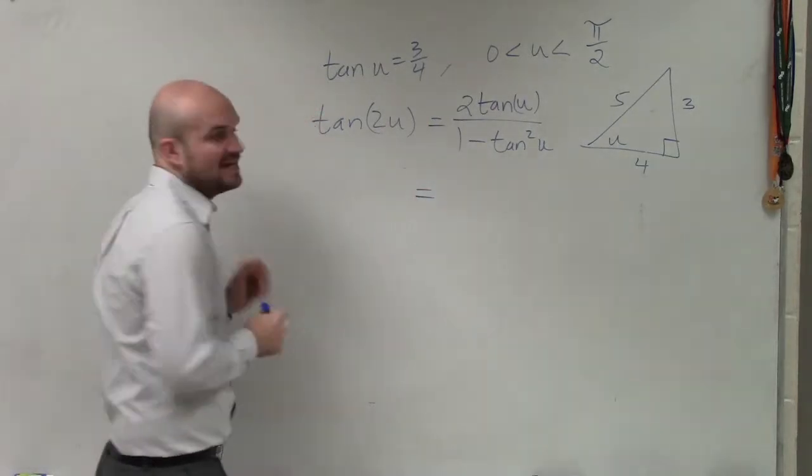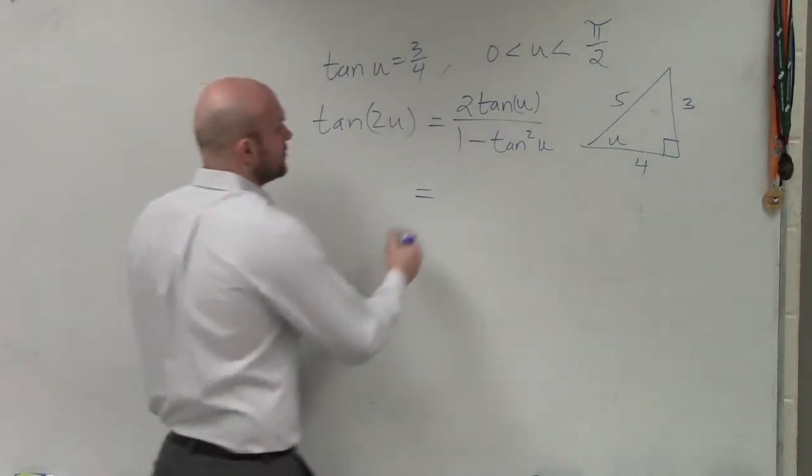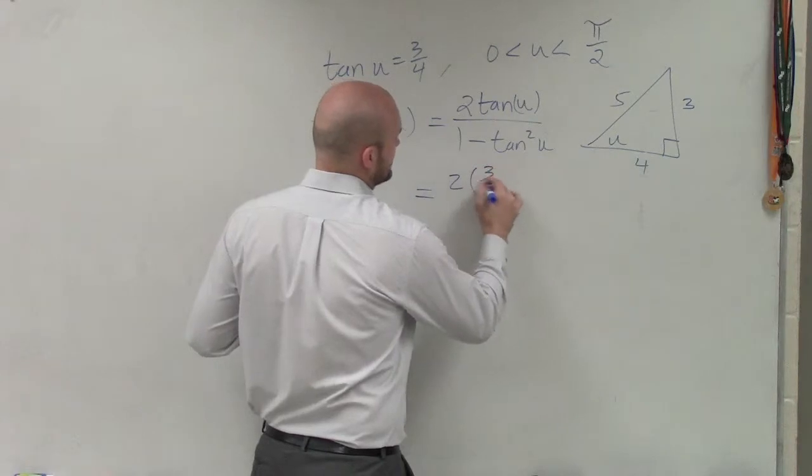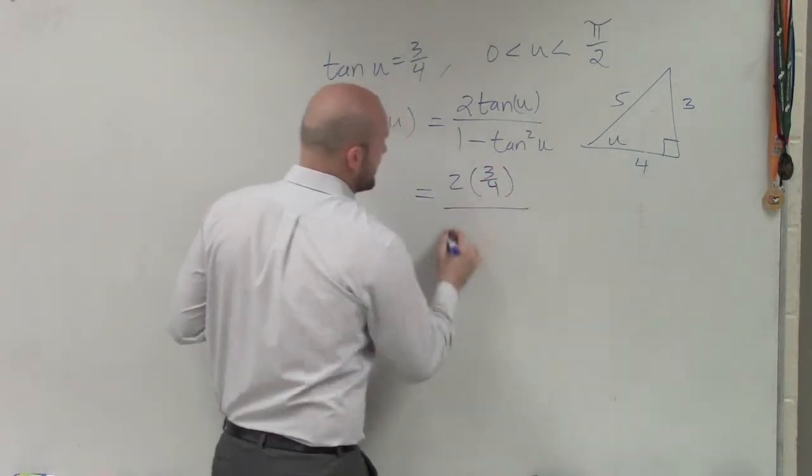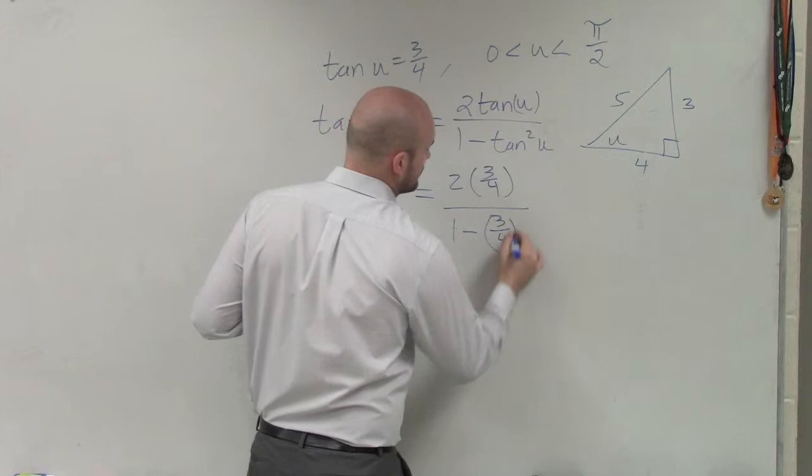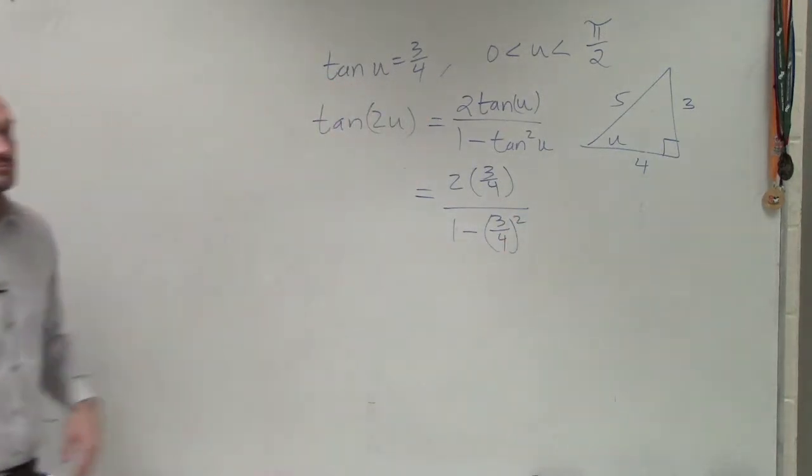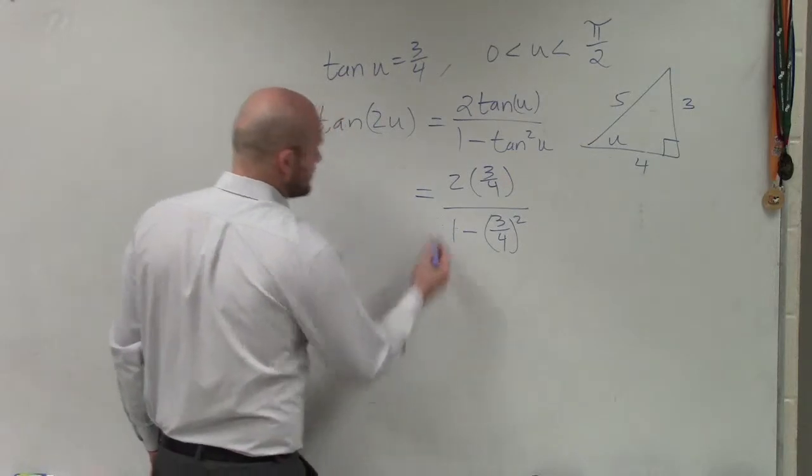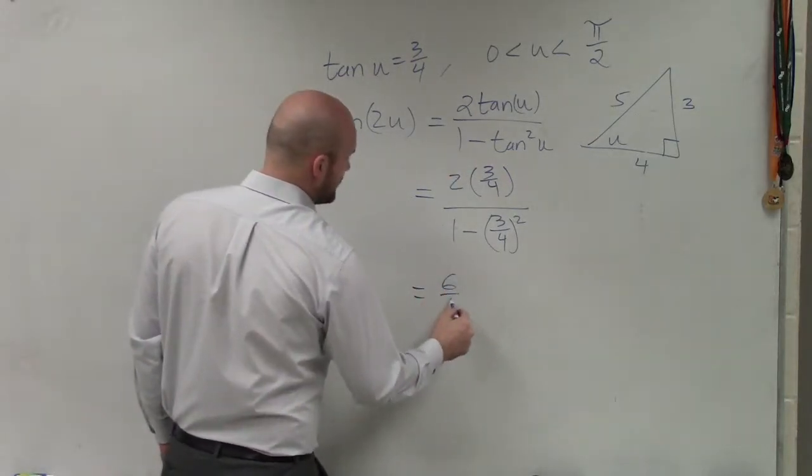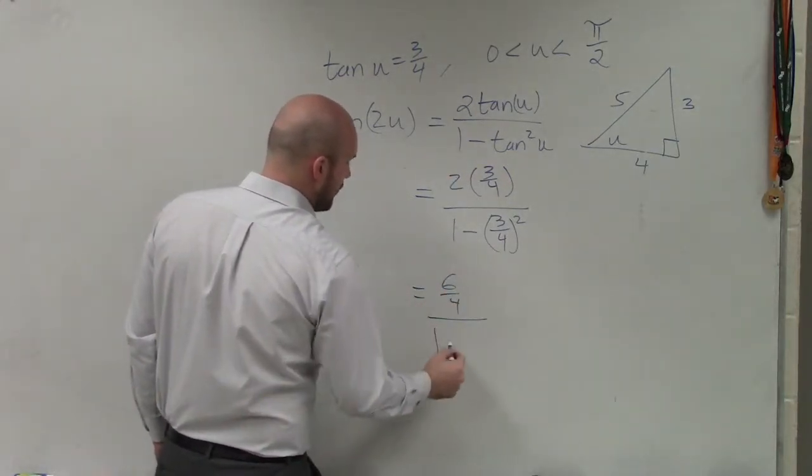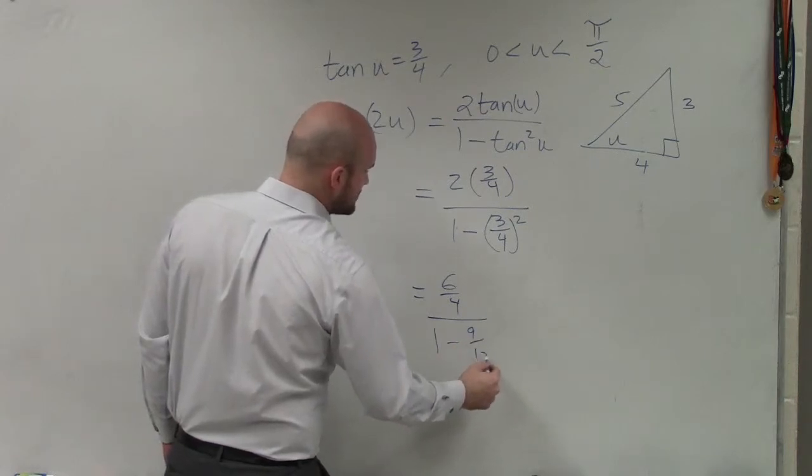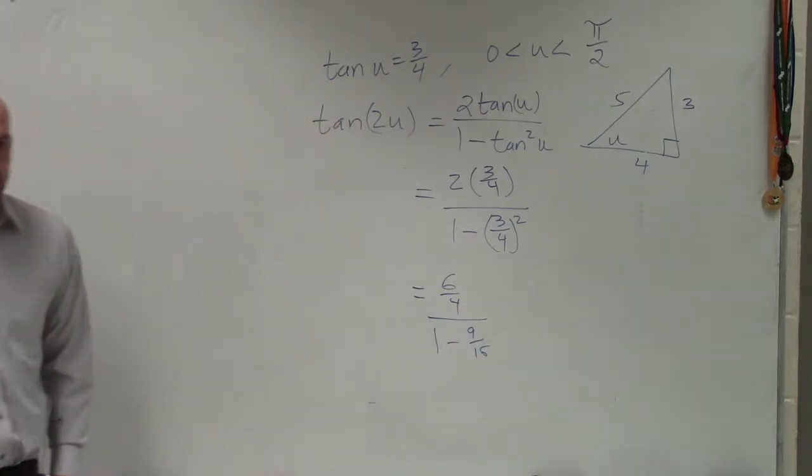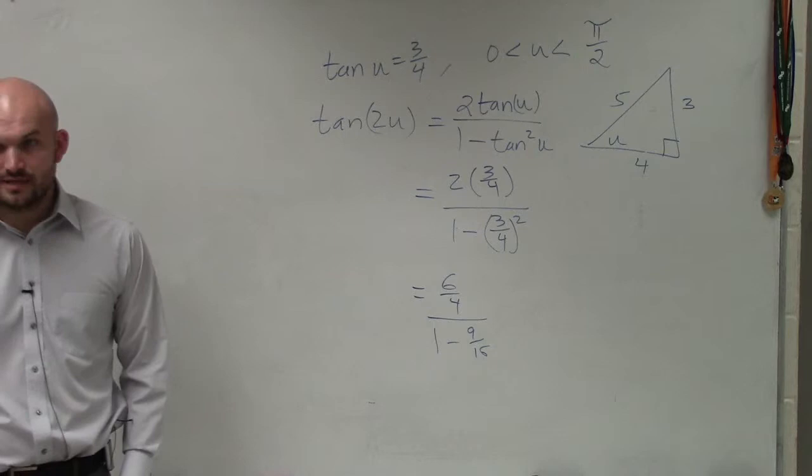Well, tangent of u is 3 over 4. So we have 2 times 3 over 4 divided by 1 minus 3 over 4 squared. Right? So I can simplify this as 6 over 4 over 1 minus 9 over 16.